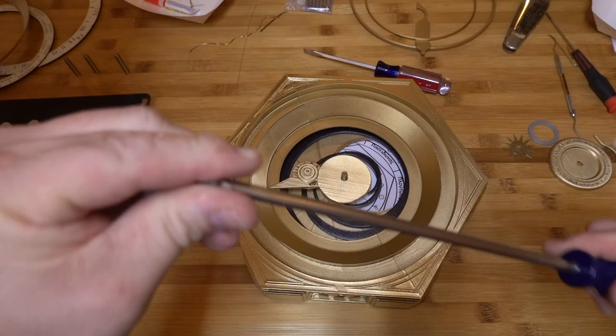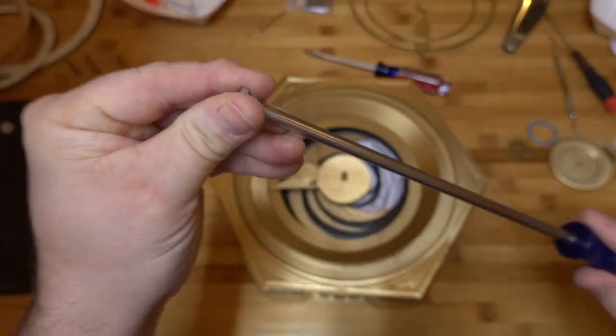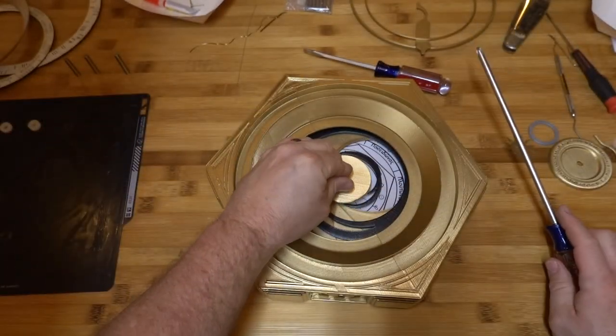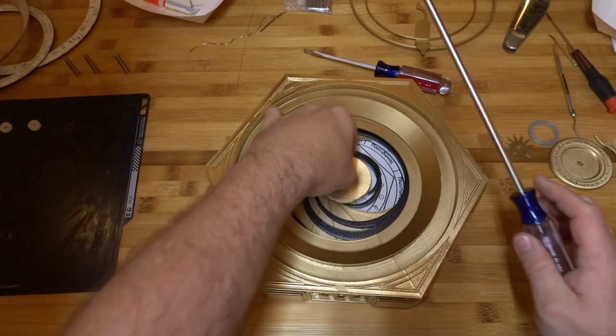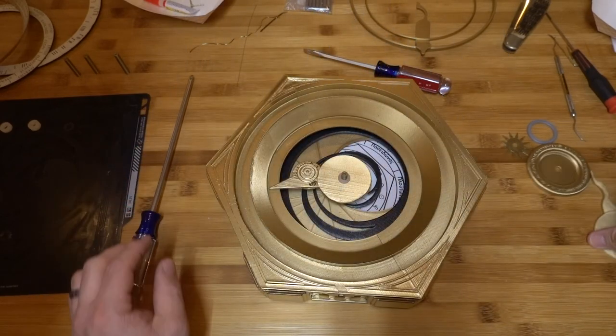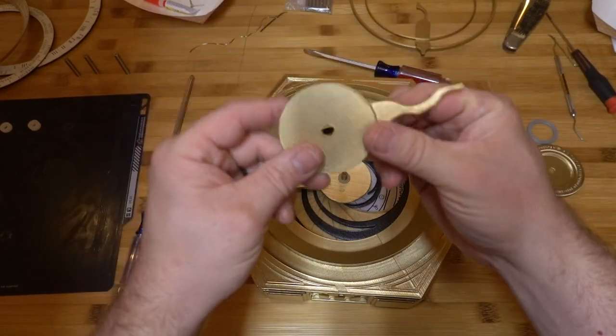The small spacer goes between the two hands, so that's this guy right here. This is our minute hand, and I believe this is the orientation.